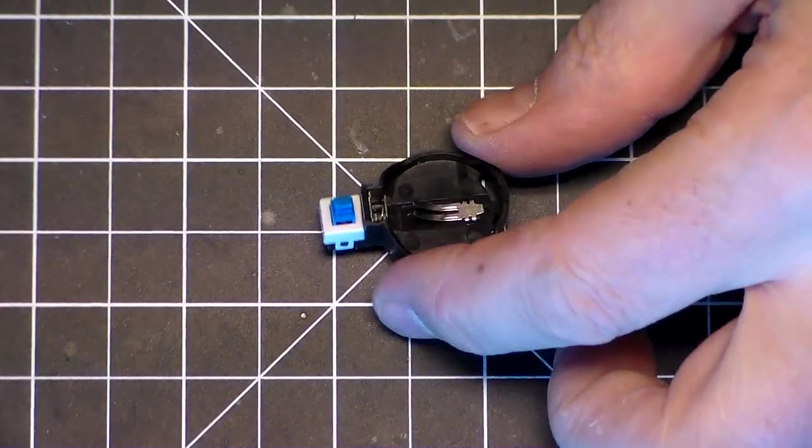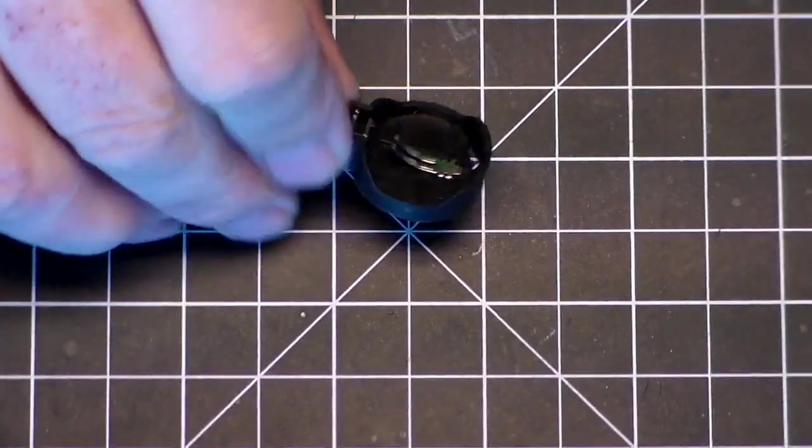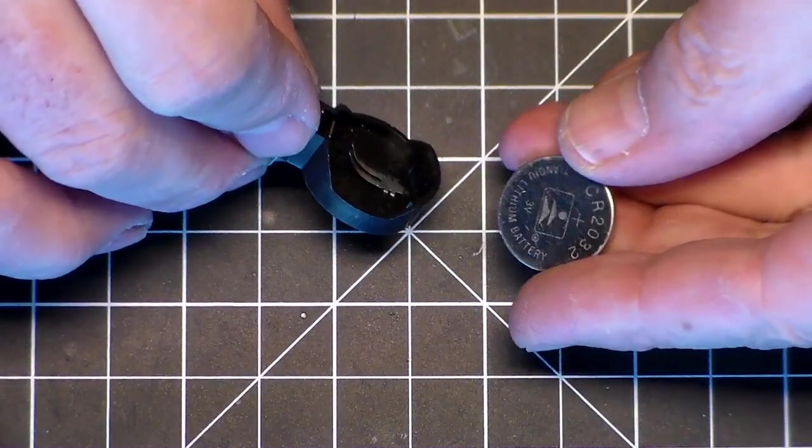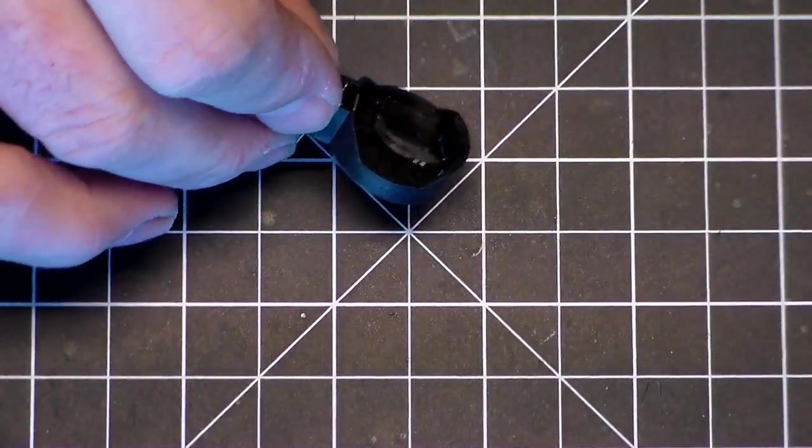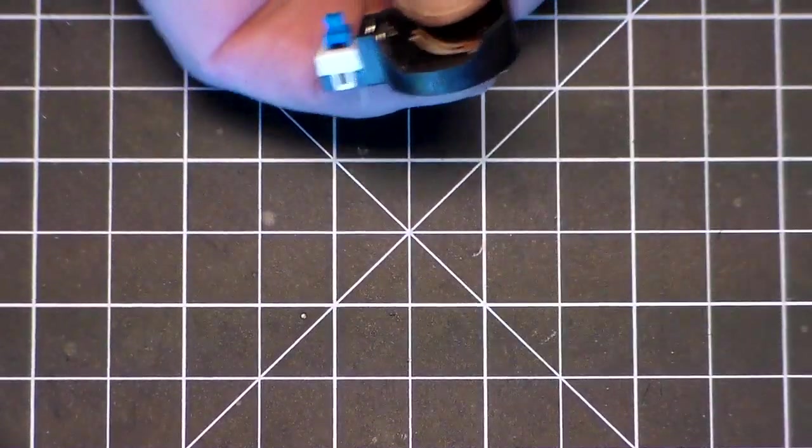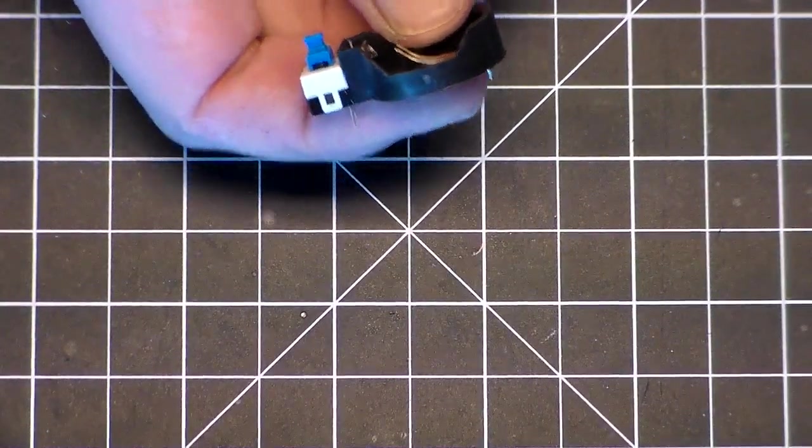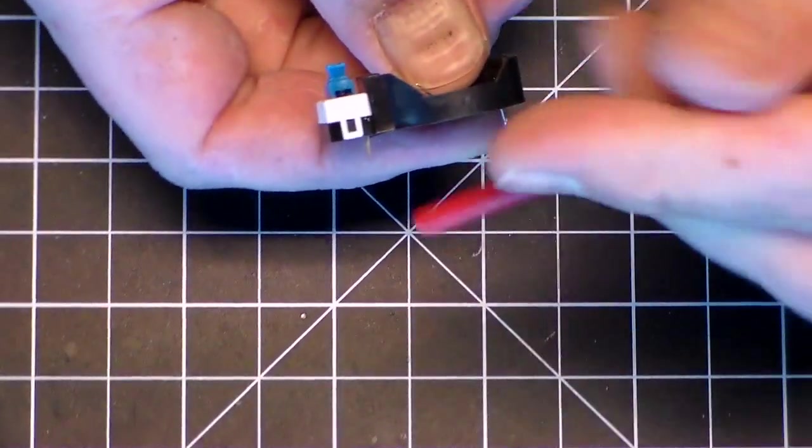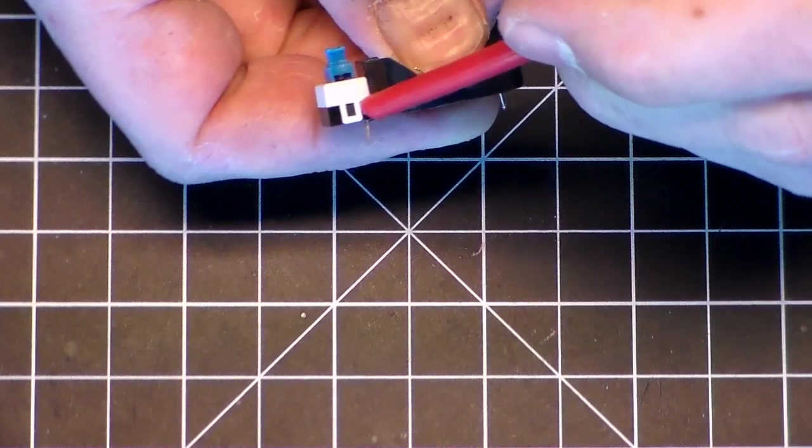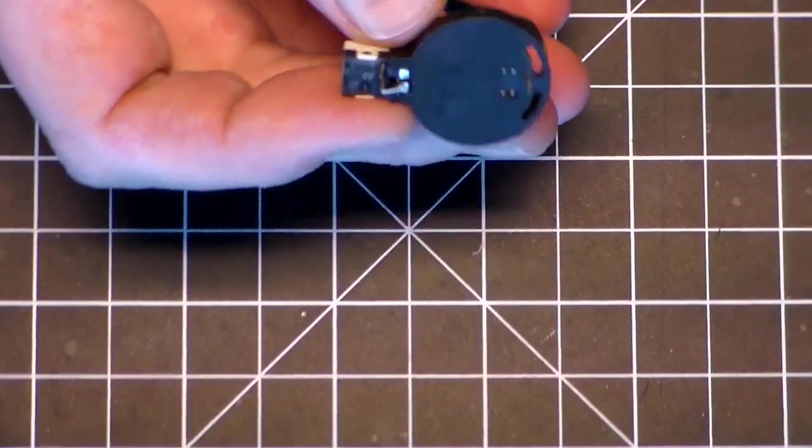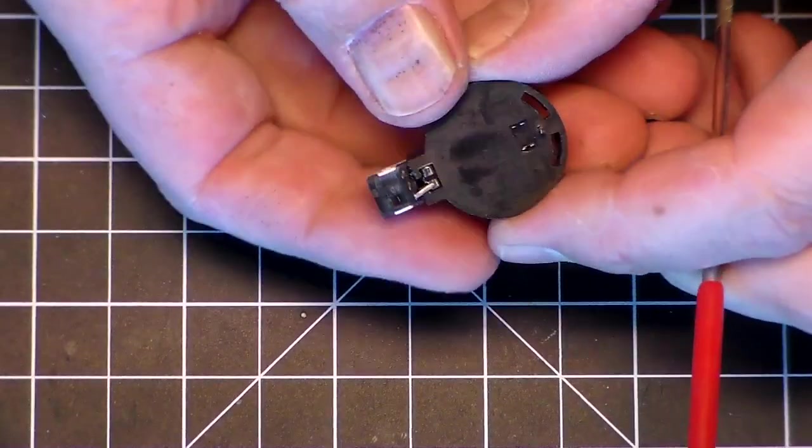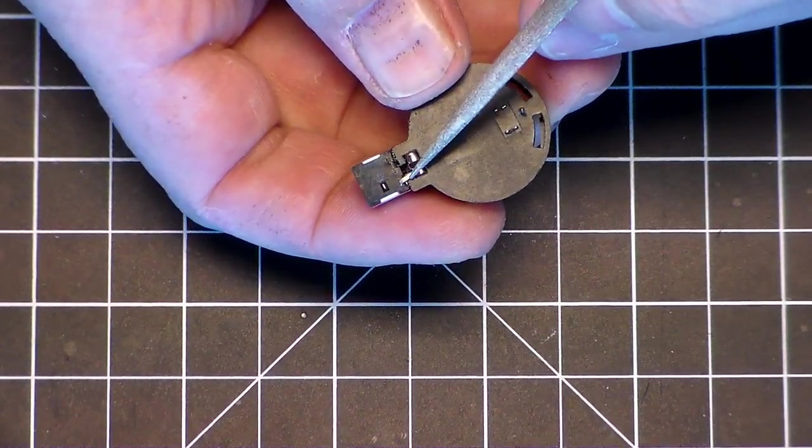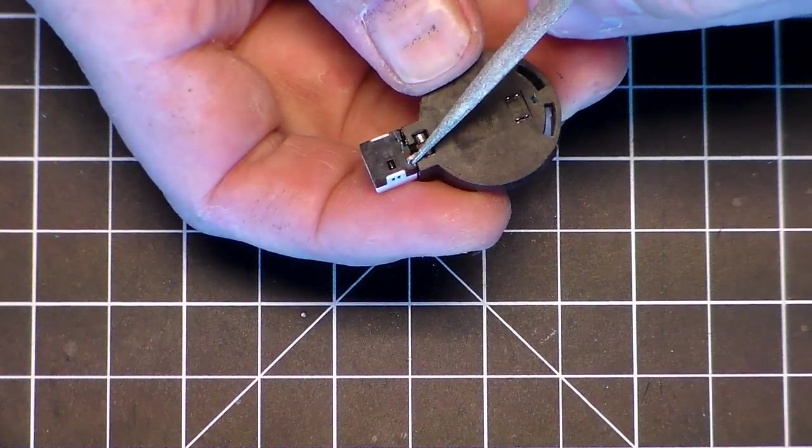So what I have here is a holder for a coin battery, it's a 2032 coin battery and what I've done is I have taken a little on off switch here and I've actually five minute epoxied it to the side edge of this holder.